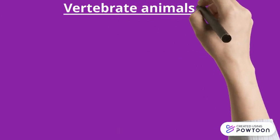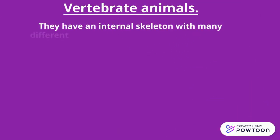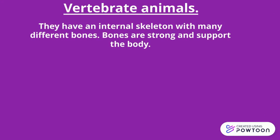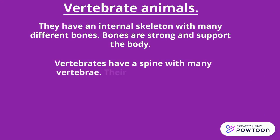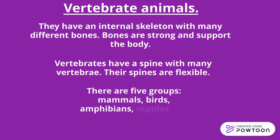Vertebrate animals have an internal skeleton with many different bones. Bones are strong and support the body. Vertebrates have a spine with many vertebrae and their spines are flexible. There are five groups: mammals, birds, amphibians, reptiles, and fish.